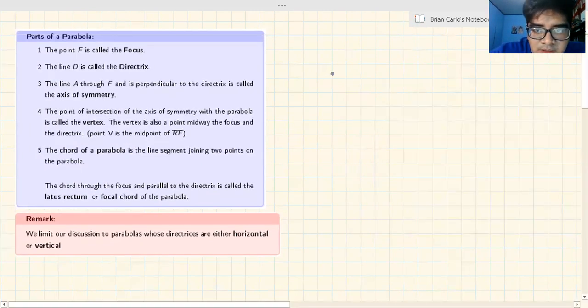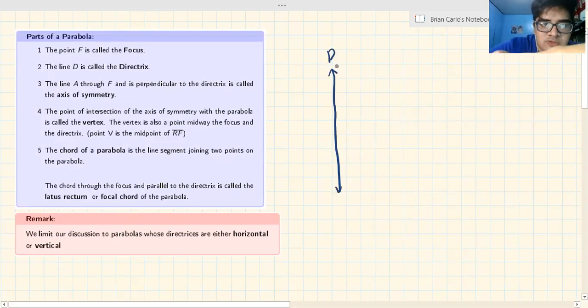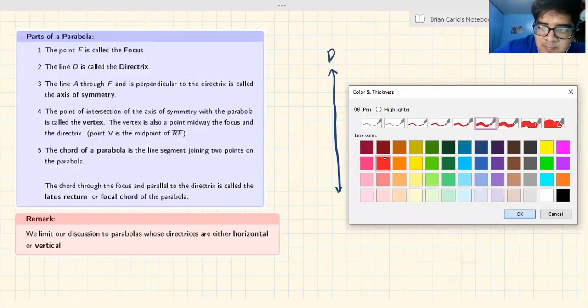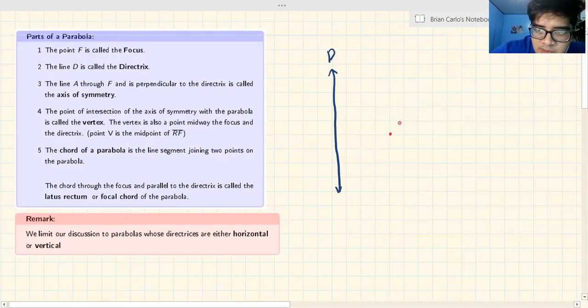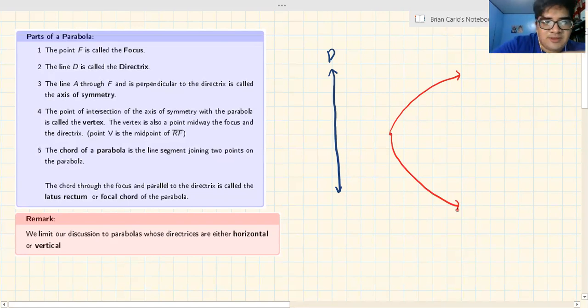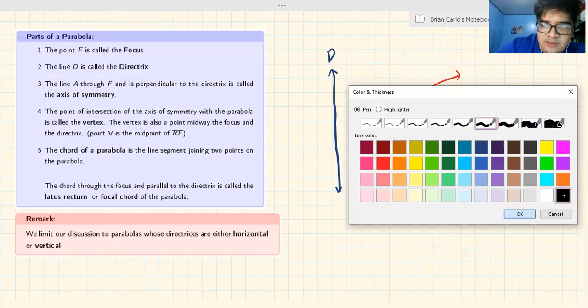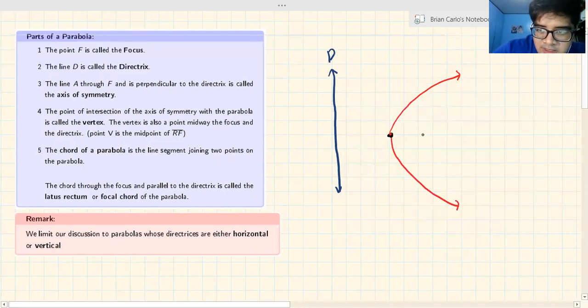Let's draw again the fixed line, which is D, which is the directrix. And let's draw again the parabola. This is the most difficult part. I added a point because there's a reason I added that point. This is the fixed point F, the focus. D is the directrix.